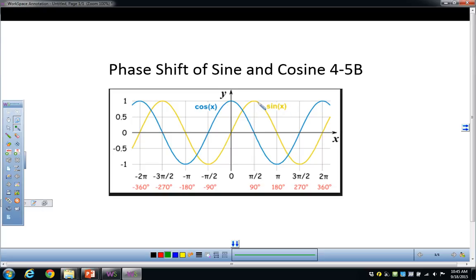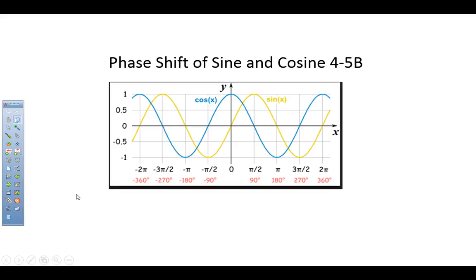If I took sine and subtracted pi over 2, I would move it back this way. And if I took cosine and moved it forwards pi over 2, then I would get my sine graph. We're going to move on to the next thing, which is a general formula that they give you in the book — this formula right here.